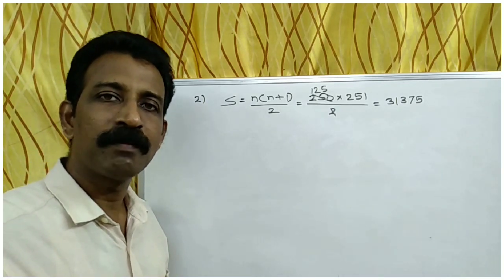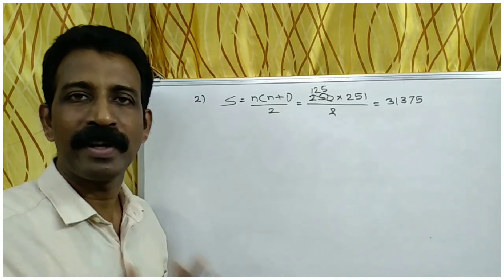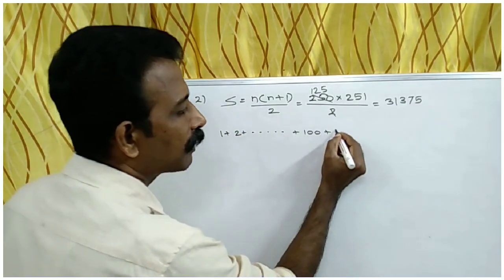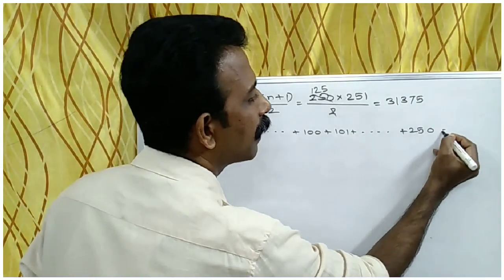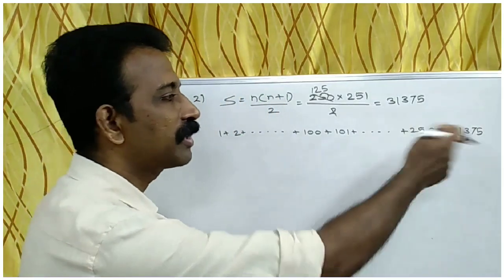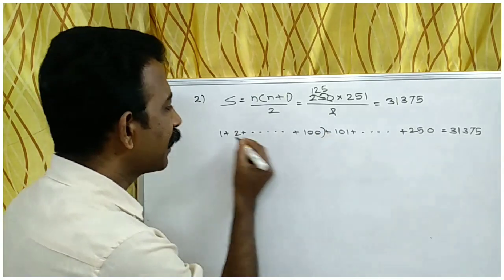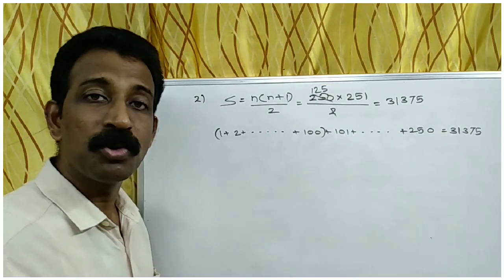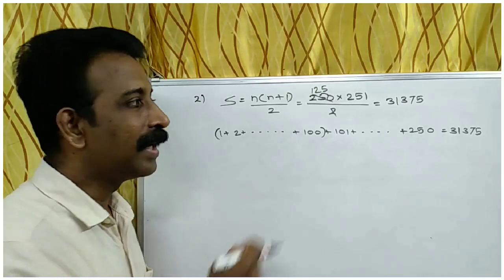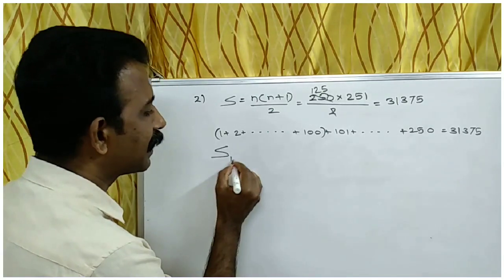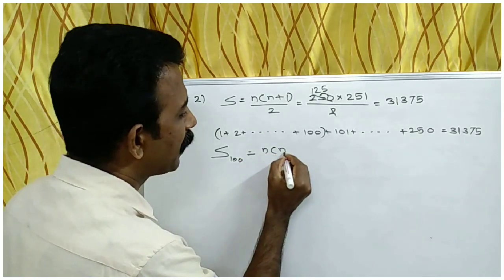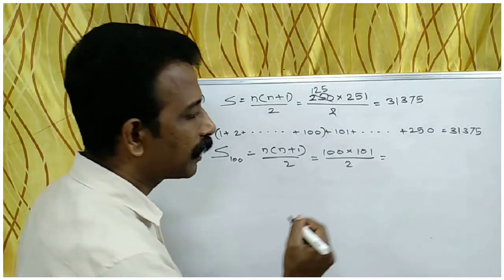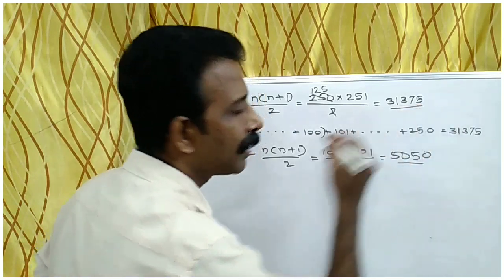Next, we have to find the sum of numbers from 101 to 250. The sum of first 250 natural numbers gives 31375. Then, the sum of the first 100 natural numbers using N into N plus 1 by 2 gives 5050.